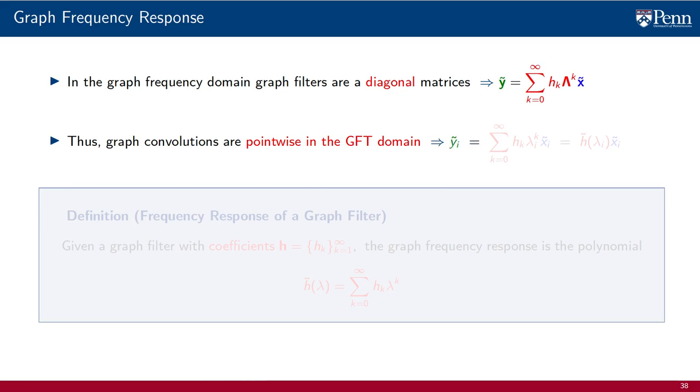This is true because all that goes on in a multiplication by a diagonal matrix is that the i-th component of the input is multiplied by the i-th diagonal entry. In our particular case, we have the i-th component of the GFT of the output given as the product between the i-th component of the GFT of the input and the corresponding diagonal element, which is associated with the i-th eigenvalue of the graph shift operator. This is a very simple observation. In fact, its simplicity is rather the point, but nevertheless, one that is insightful.